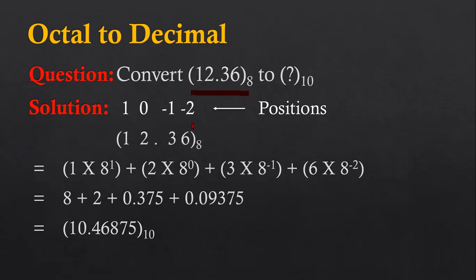The number is 12.36, which is an octal number we have to convert into decimal. The position values are identified for both the left-hand side and right-hand side of the decimal point. For the left-hand side, we have positive positions 0 and 1. For the right-hand side, we have negative positions minus 1 and minus 2. The digits 1 and 2 are multiplied with positive powers, and the digits 3 and 6 are multiplied with negative powers.